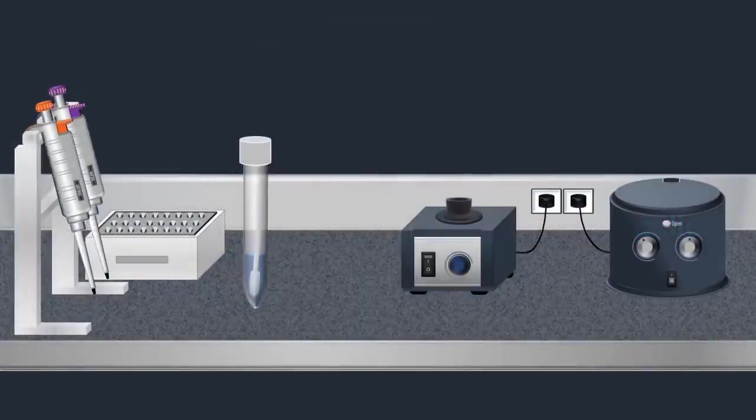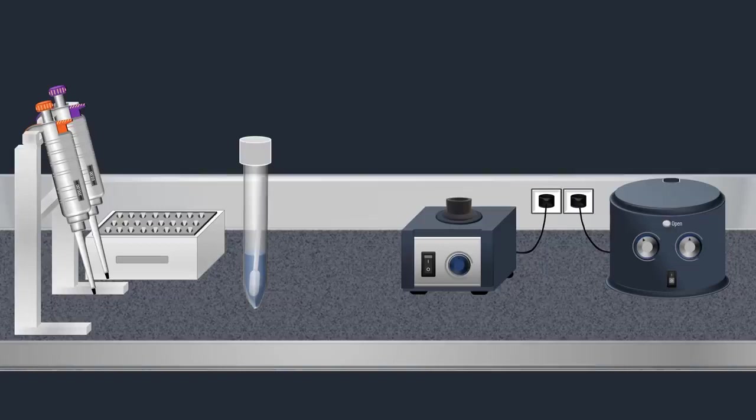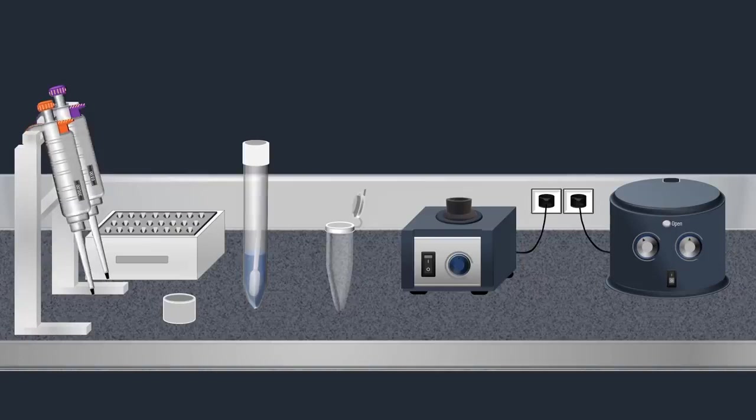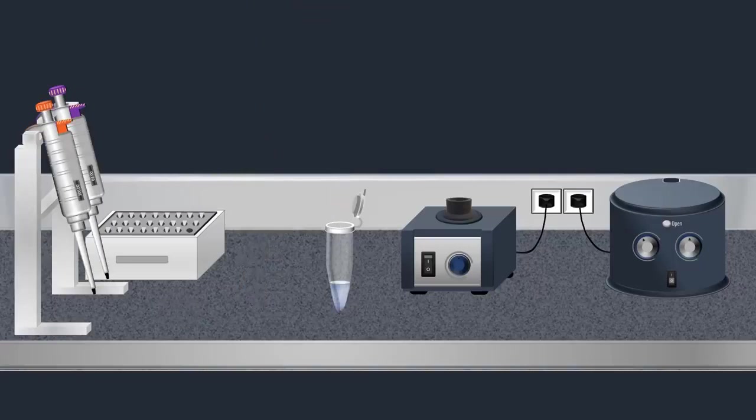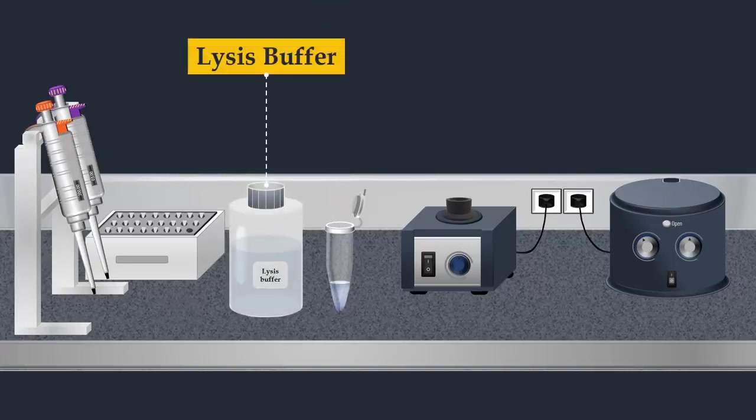To perform this method, viral RNA must be extracted. Several RNA purification kits are available for convenient, fast and effective isolation. To extract the viral RNA using a commercial kit, the sample is first added into a microcentrifuge tube, then it is mixed with a lysis buffer.